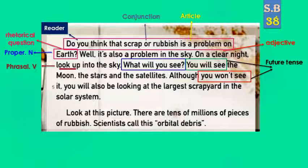Here we have the three forms of future tense — الحالات الثلاث: 'What will you see?' — the question form, شكل السؤال. 'You will see' — the affirmative form, الحالة المثبتة. 'You won't see' — the negative form, الحالة النفي. We will talk about this grammar rule in detail next lesson, إن شاء الله.